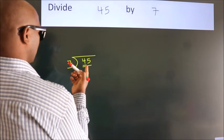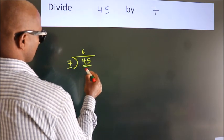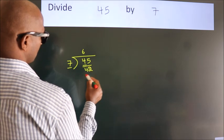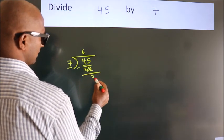A number close to 45 in 7 table is 7 times 6, 42. Now we should subtract. We get 3.